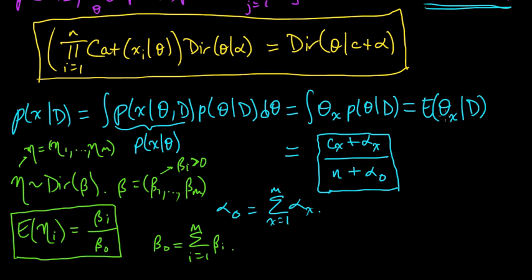And what we did here, when we were deriving this predictive distribution, was we had the expected value of x, of theta x, which is the x-th coordinate of the theta vector here. It's the expected value given d. So this is the expected value under the posterior distribution on theta. That's what this is saying.